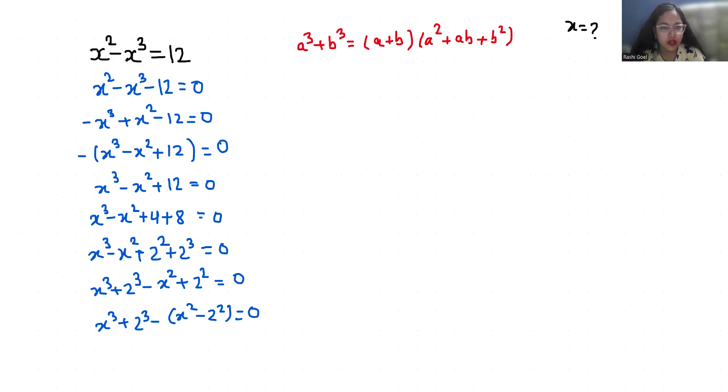And a square minus b square which is equals to a plus b times a minus b.